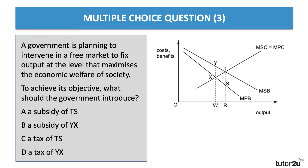Question three. This is an analysis diagram, so take a moment on this one. A government is planning to intervene in the free market to fix output at a level that maximises the economic welfare of society. To achieve its objective, what should the government introduce? Look at the diagram, think about the externality here, and have a go at question three. In this situation, marginal social benefit is greater than marginal private benefit — there are positive externalities from consumption. The free market equilibrium is output W, but we prefer the output to be output R, where there's an external benefit of TS. To get there, the government needs to subsidise production to bring the private cost down to generate an equilibrium output of R instead of W.